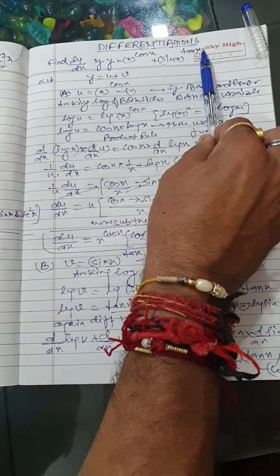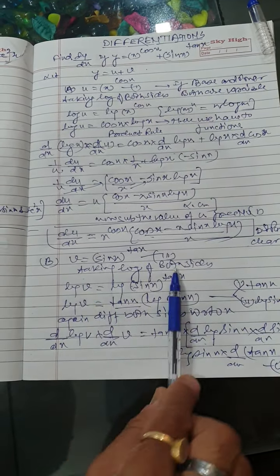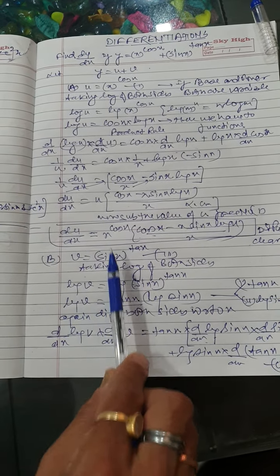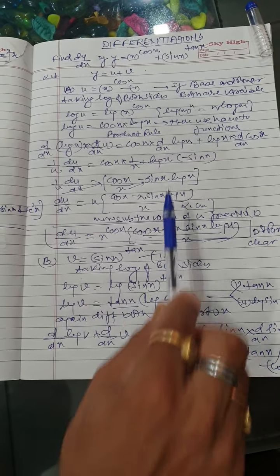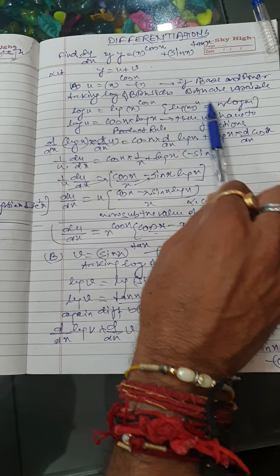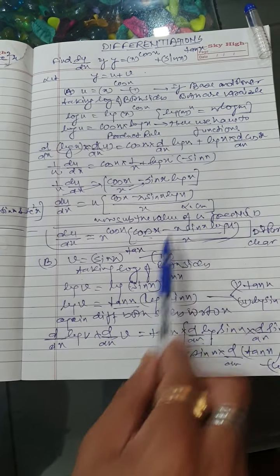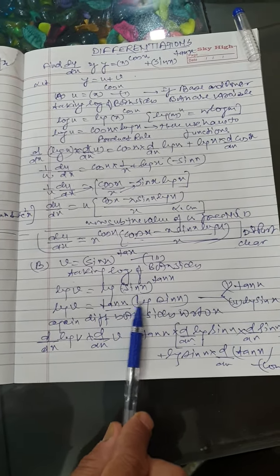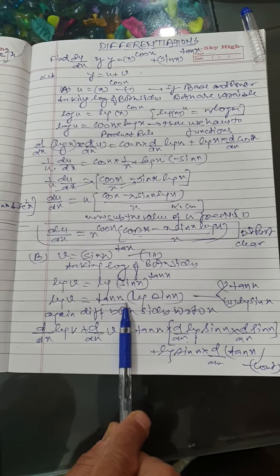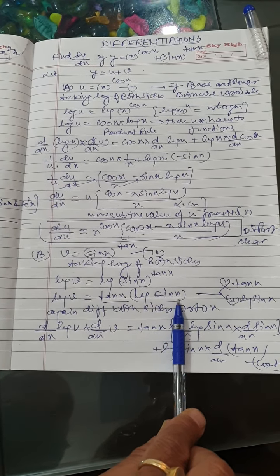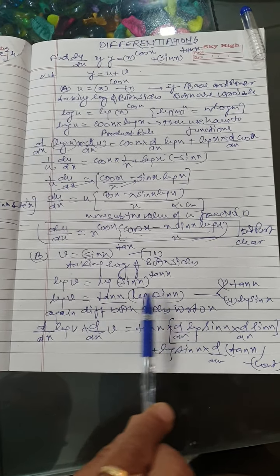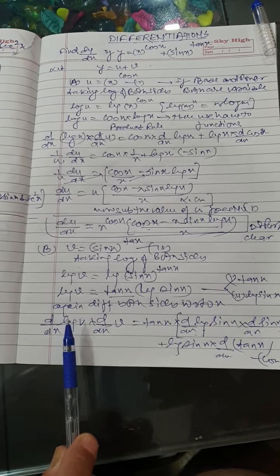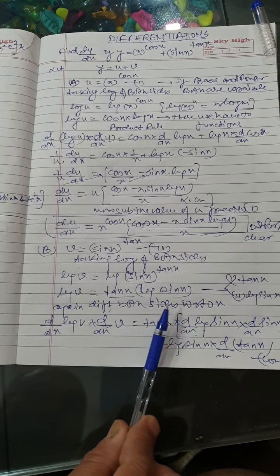Now for the second part, v is equal to sine x raised to the power tan x. After taking log, log v equals log of sine x raised to the power tan x. By the same formula, log m raised to the power n equals n log m, it becomes tan x into log sine x. One function is tan x and the other is log sine x, so we use the product rule on the right hand side.